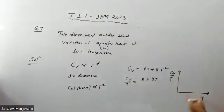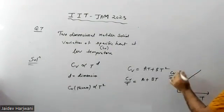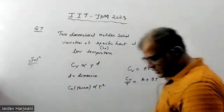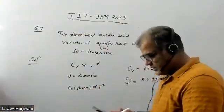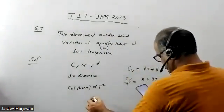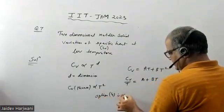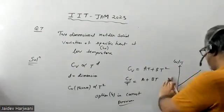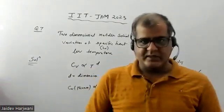This linear relationship corresponds to option D in the question. So option D is the correct answer. This is a very simple, straightforward question. Thank you very much.